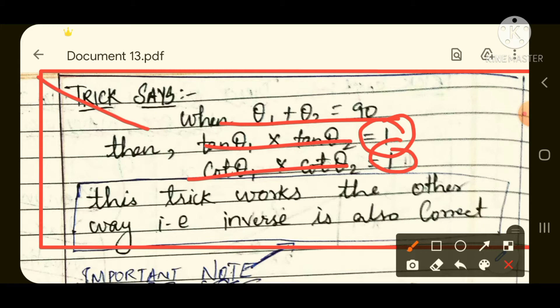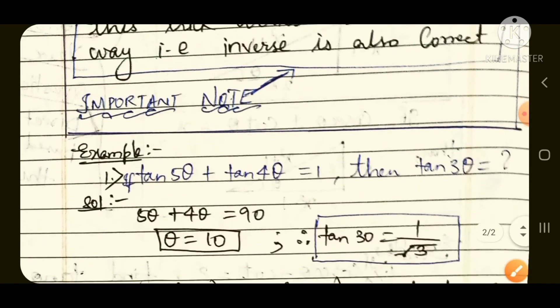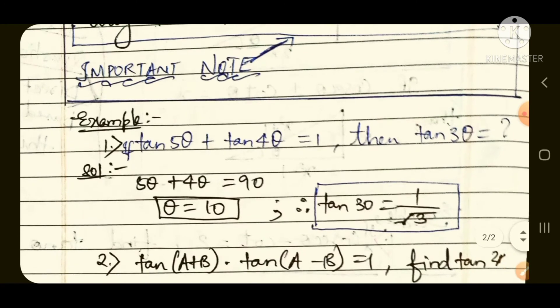When theta 1 plus theta 2 is equal to 90 degrees, and if they are asking you to find tan theta 1 times tan theta 2, or cot theta 1 times cot theta 2, then the answer is simply 1. And here one of the amazing things is that the trick works on the reverse side also.